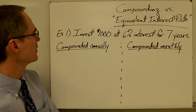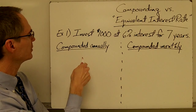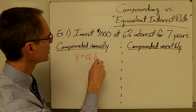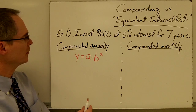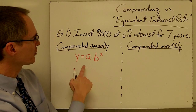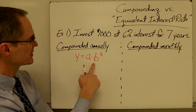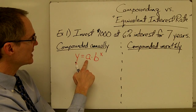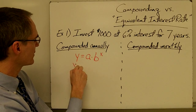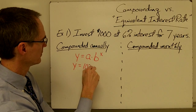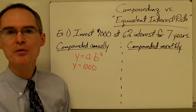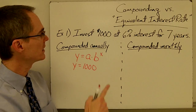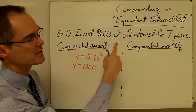Compounding annually — this problem is really just a particular type of exponential growth problem. In exponential growth problems you often see the standard form of an exponential function where A is the initial value, in this case one thousand dollars, and B is something called the growth factor. The growth factor is just one plus the growth rate, and in this case my growth rate is six percent.